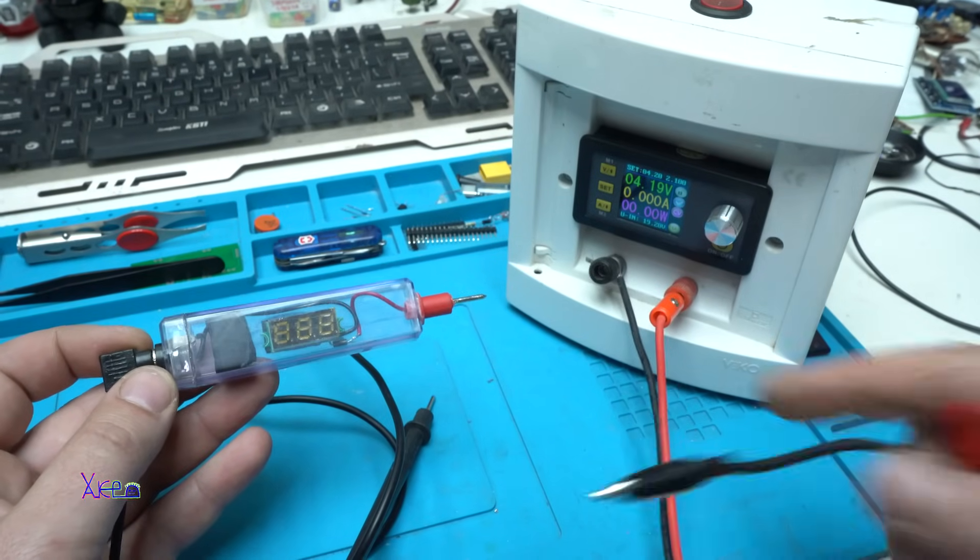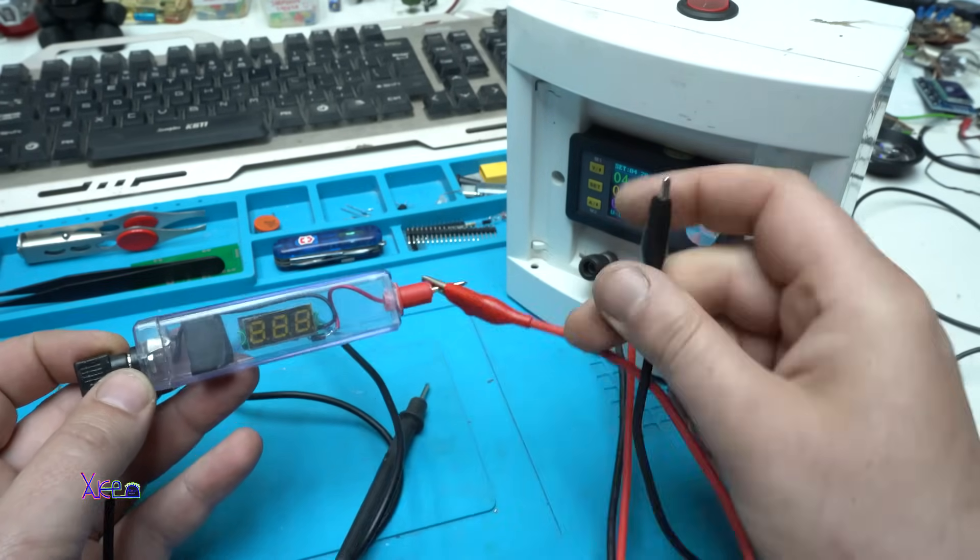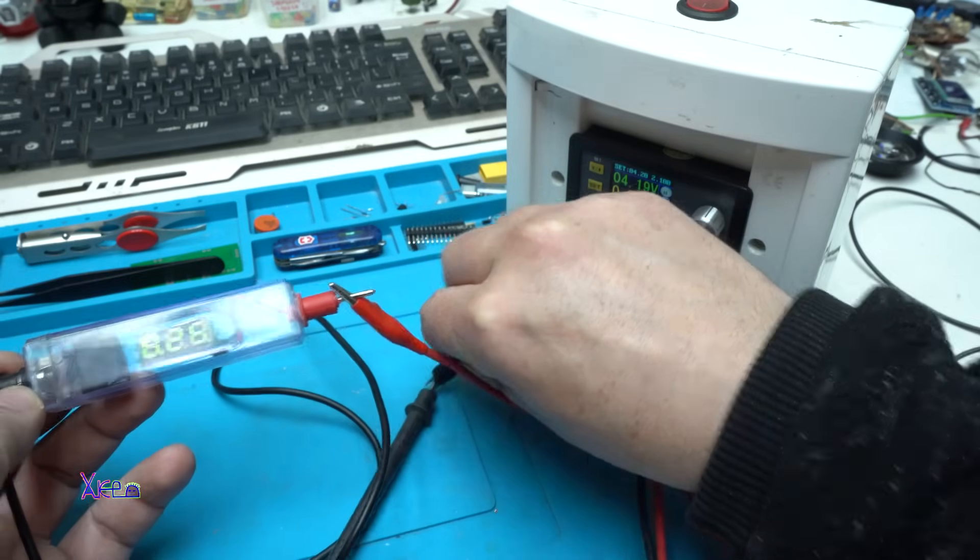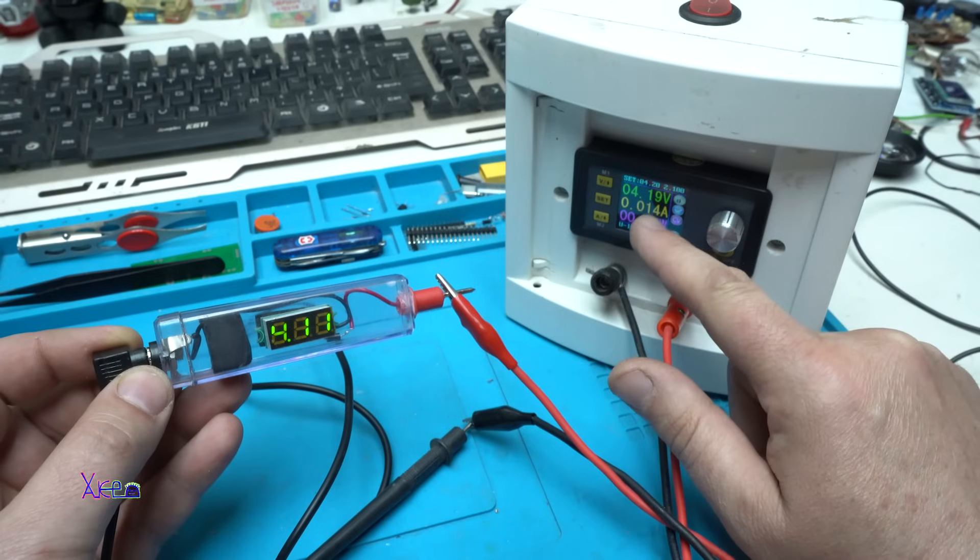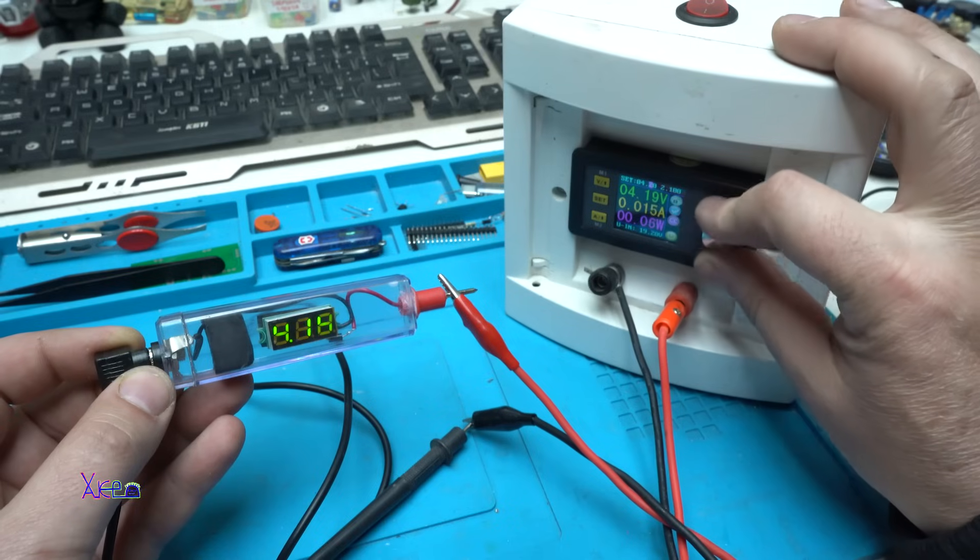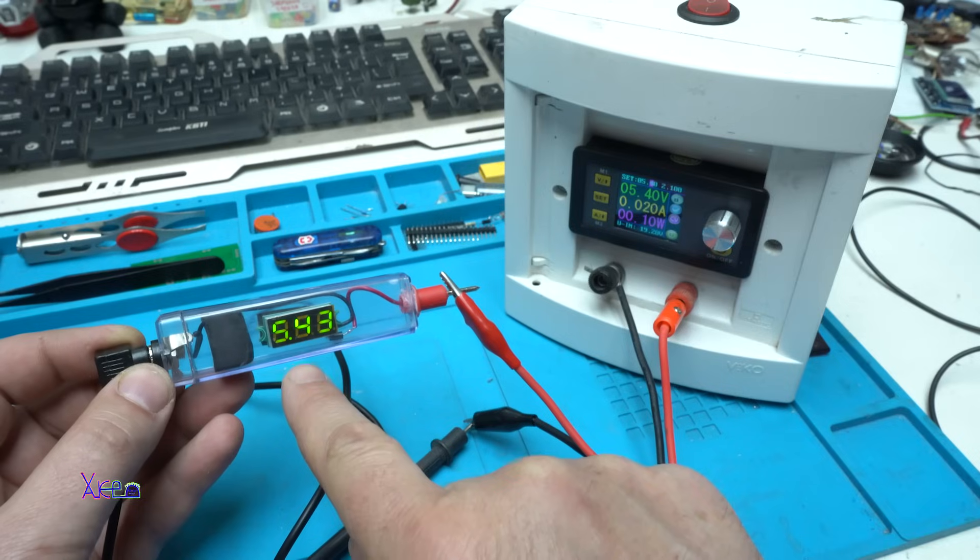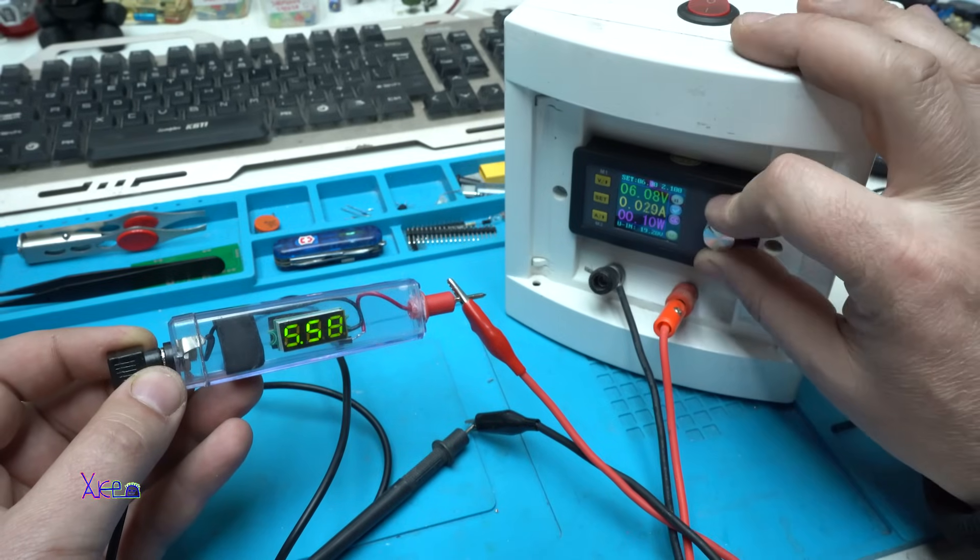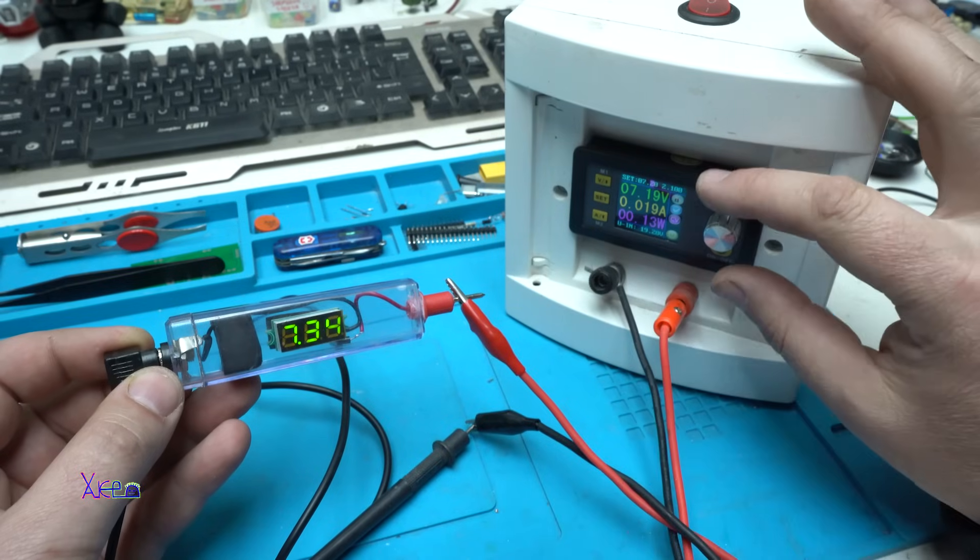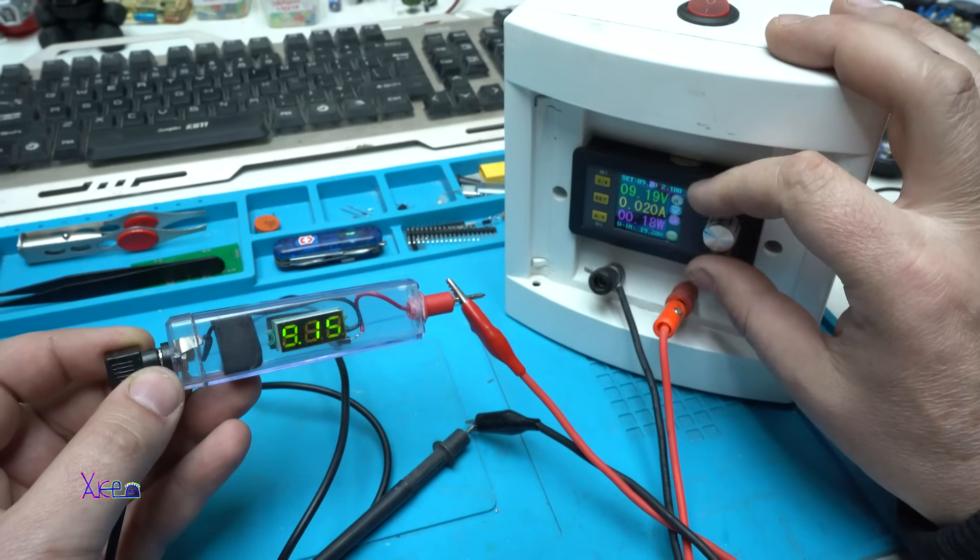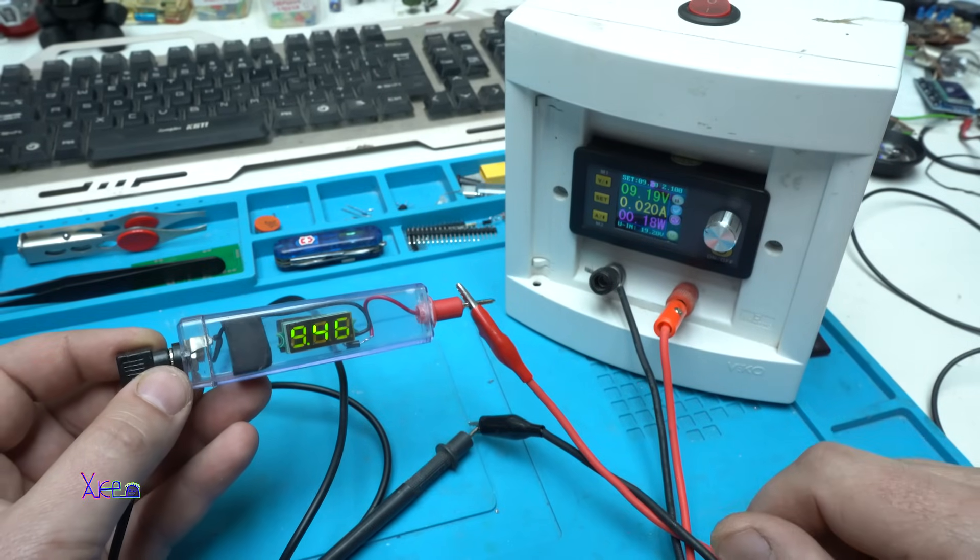I'm going to test my multimeter, is it correct, with my power supply. We have 4.11 volts. Here it says 4.19 volts. I'm going to increase to 5.4, that is correct. Increasing to 7.2, 7.3. Okay. 9.2, 9.48. Alright, it's okay.